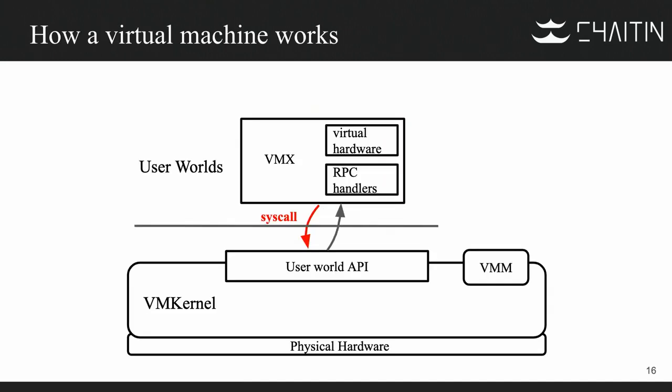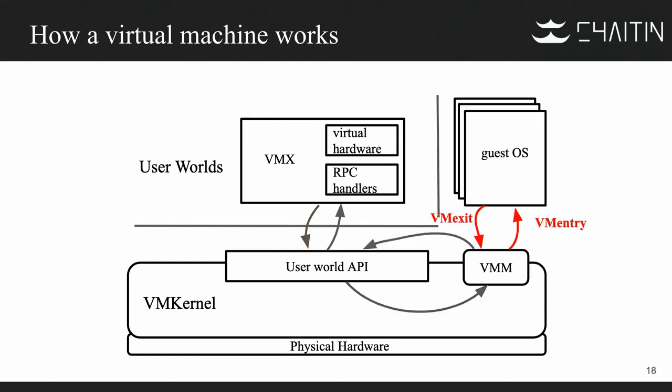I'd like to give an example of how this works in practice. The VMX process, on the user side, communicates with VMM via custom, largely undocumented syscalls. VMM then launches the environment from the virtualized OS. There are sensitive instructions involved. The VMM process also emulates virtual hardware. This is how a virtual machine works inside ESXi.